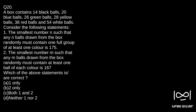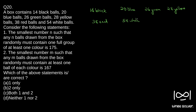Question 20: A box contains 14 black balls, 20 blue balls, 26 green balls, 28 yellow balls, 38 red balls, and 54 white balls. Before reading the entire question, let me note down what is given: 14 black, 20 blue, 26 green, 28 yellow, 38 red, and 54 white. These are the number of balls.